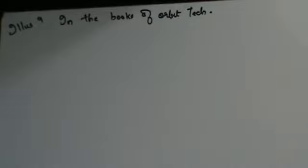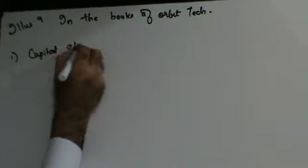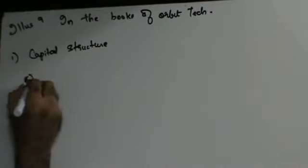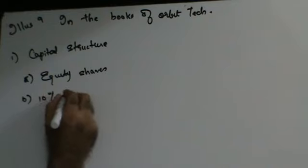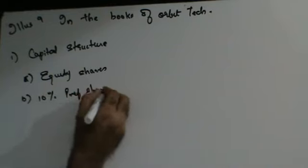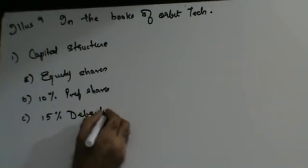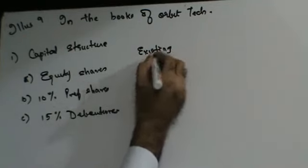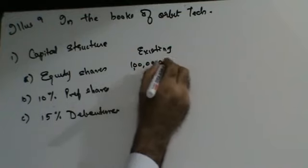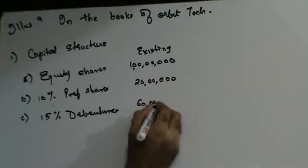Let's see the sum. NASA's Orbit Technology Limited has the following capital structure: equity shares, 10% preference shares, and 10% debentures. The existing plan has equity shares of 1 crore, preference shares of 20 lakhs, and debentures of 60 lakhs.